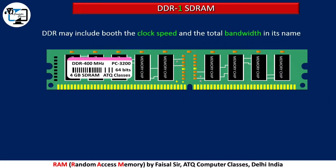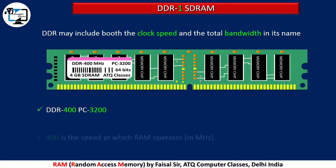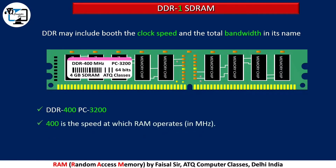DDR may include both the clock speed and total bandwidth in its name, like DDR400 and PC3200. The 400 is the speed at which the RAM operates in megahertz. 400 MHz multiplied by 8 bytes equals 3200 megabytes per second.